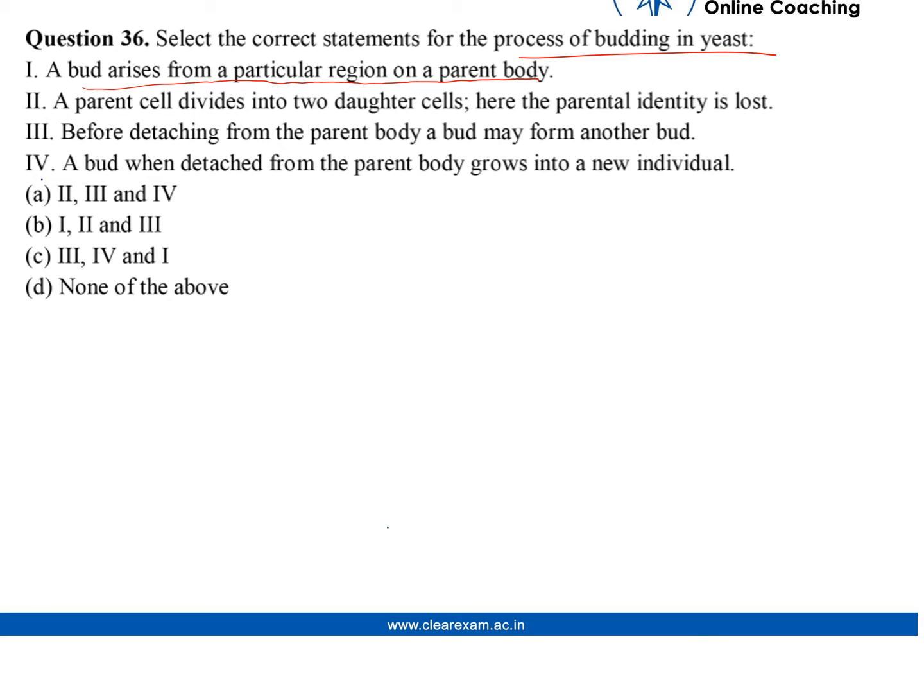The nucleus of the parent cell splits and a part of it enters inside the newly formed bud. The bud develops into a new cell or daughter organism. The new organism remains attached to the parent organism till it matures. After attaining maturity, it separates from the parent body.